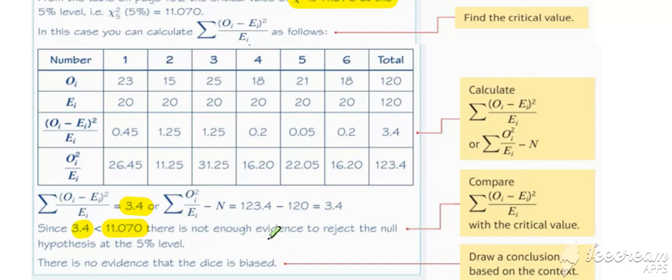And therefore, that supports the null hypothesis that there is not enough evidence to reject the null at the 5% level. There is insufficient evidence to suggest that the dice is biased.